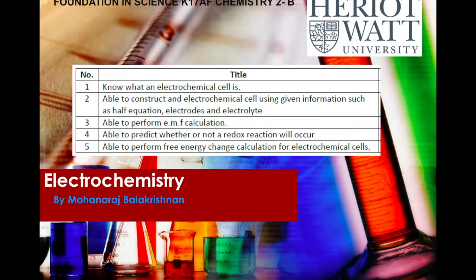I've already talked about this in the previous video where I performed the calculation of the EMF. You could see that when we have a cell that works, the general EMF calculated would end up being a positive value. If the EMF value is negative, it's simply an indication that the cell will not work — that is, the redox is not spontaneous. We can further support this by obtaining a free energy value, also known as Gibbs energy or Gibbs free energy, using the E° value for a particular cell.